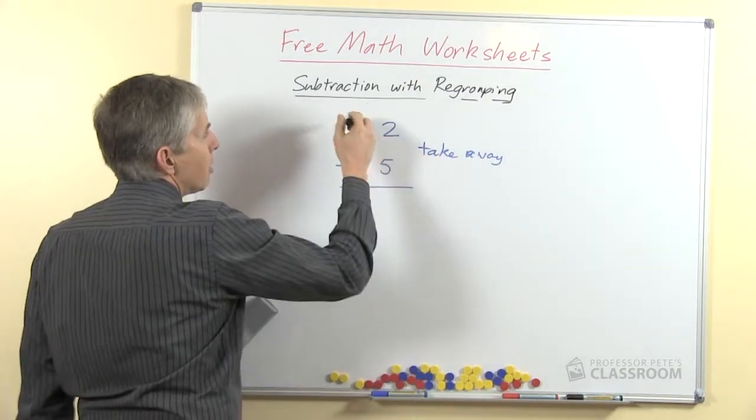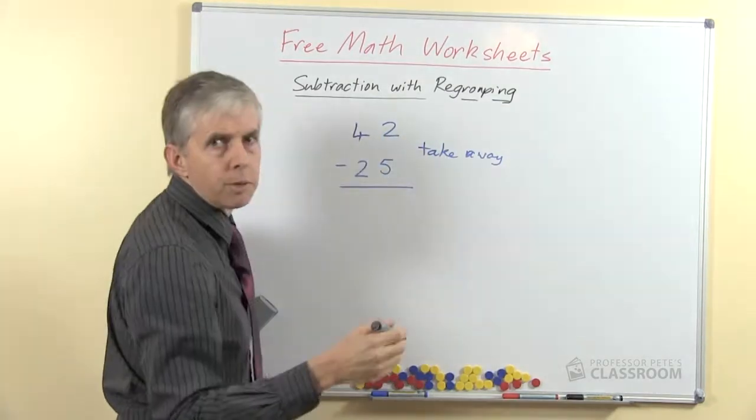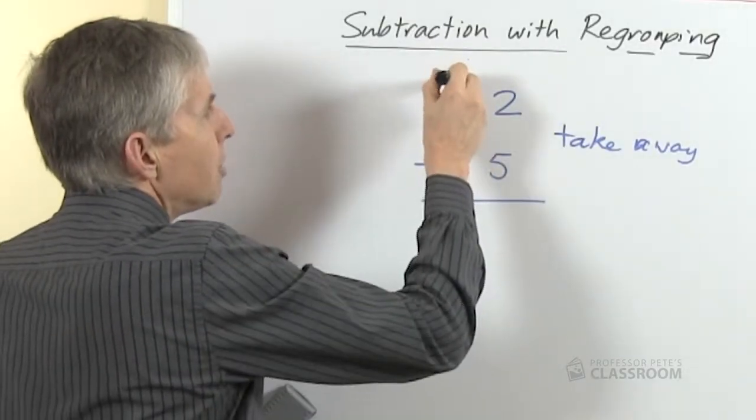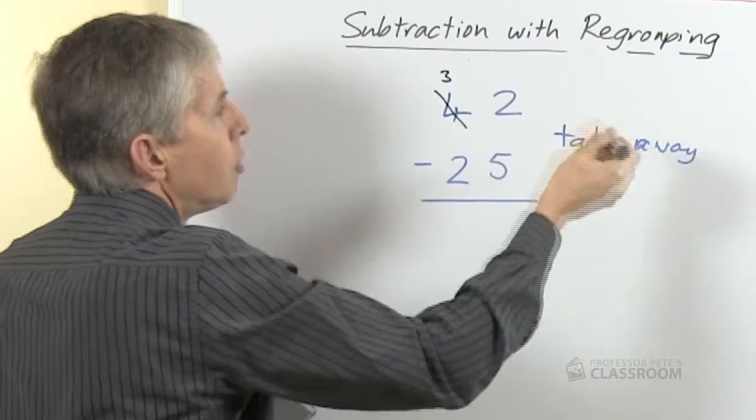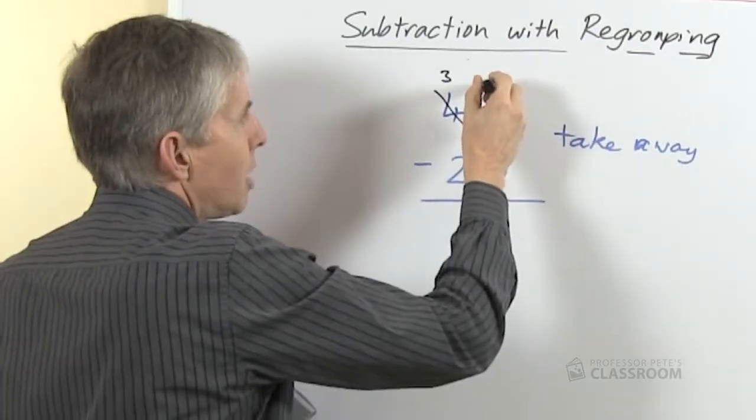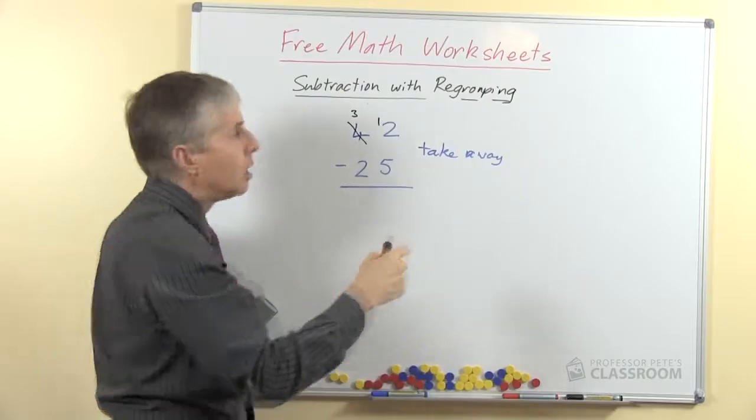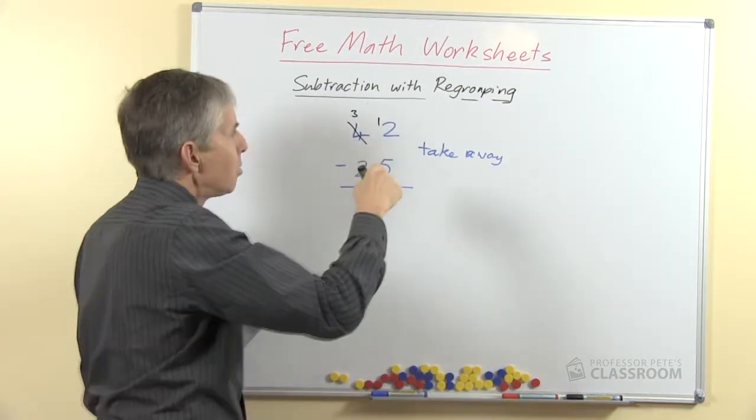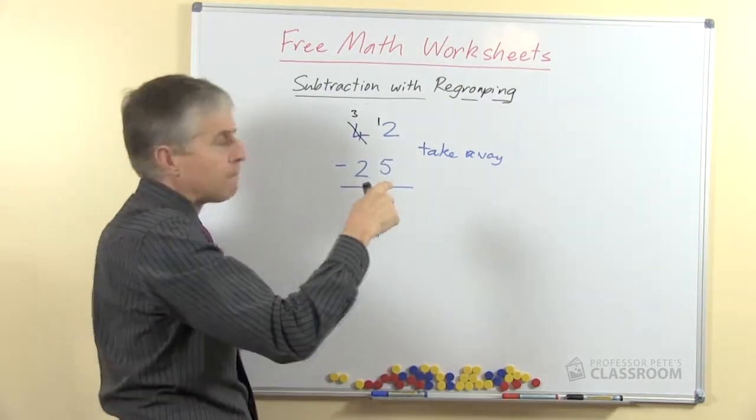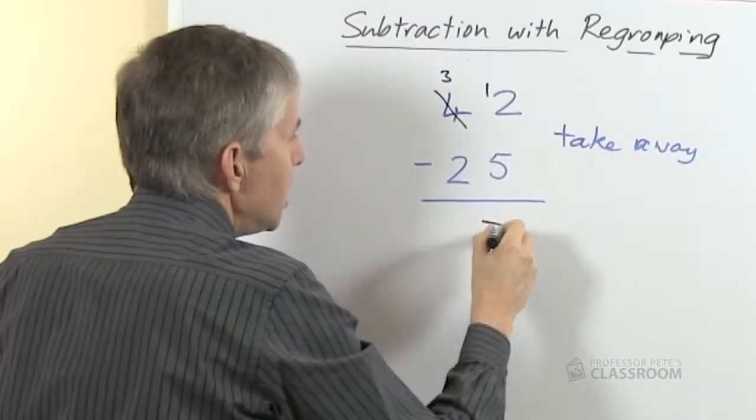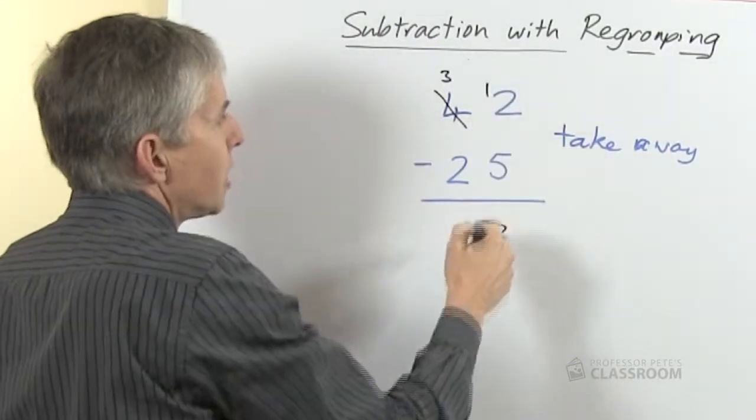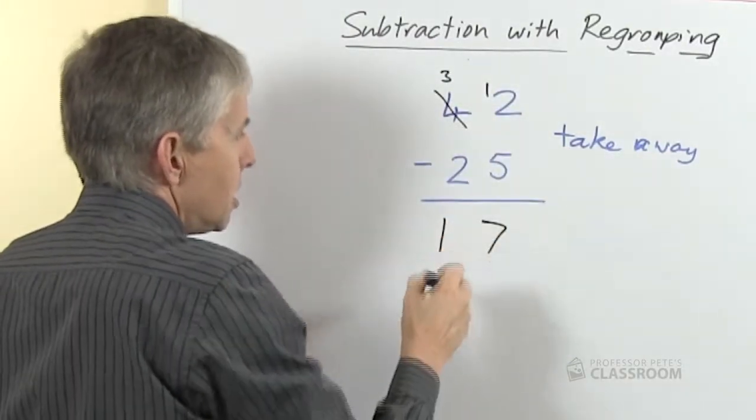2 take away 5 we can't do so we're going to regroup or trade. We're going to take a 10, leaving 3 of them behind and regroup that into 10 ones. We'll write that as a 1 in front of the 2. You could cross the 2 out as well and write 12 if you want to but I think that's more crossing out than you need. 12 take away 5 is a number fact so it will help if students know their number facts. 12 take away 5 is 7, 3 take away 2 is 1.